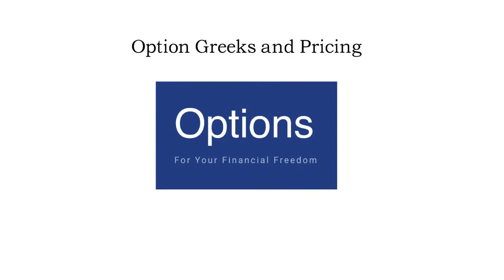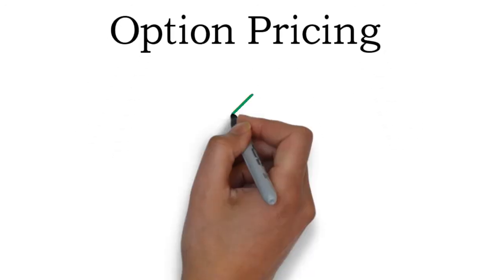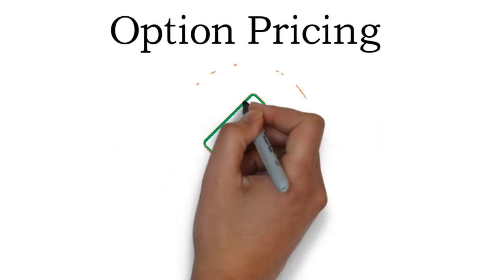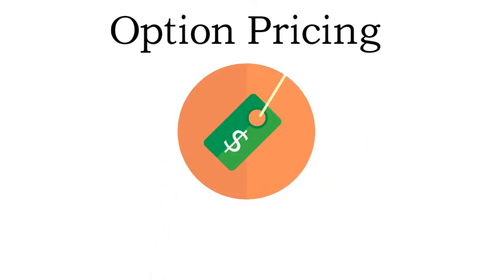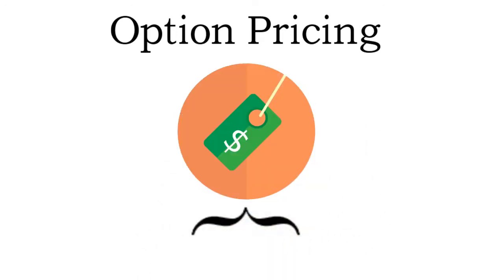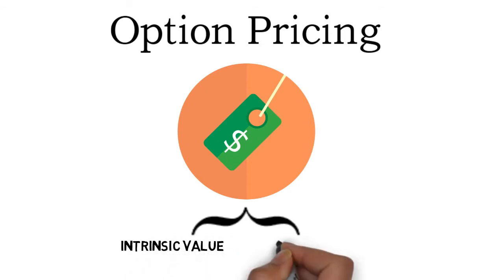It is crucial to your success with options to understand how options are priced and how the pricing is affected. The price of an option consists of two parts: intrinsic value and extrinsic value. Together they make up an option's price.